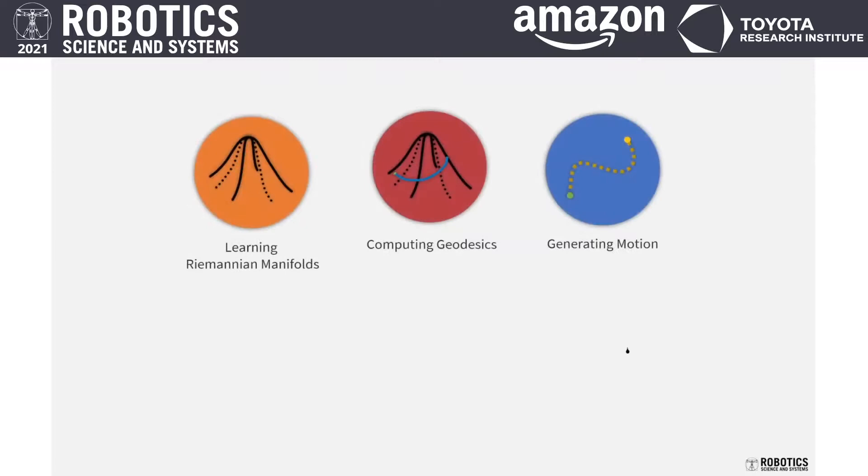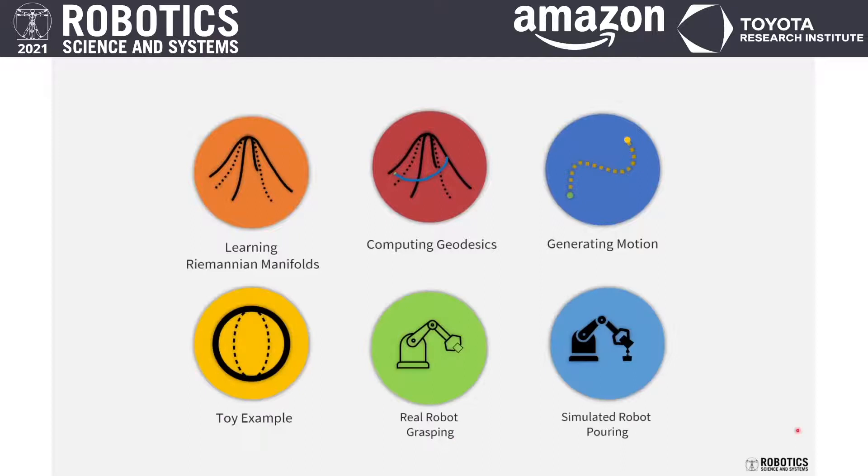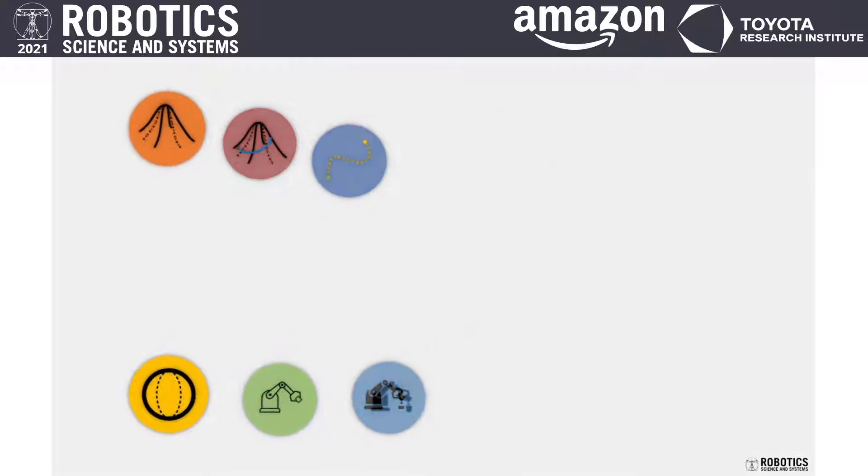We explain the method in three different steps: learning Riemannian manifold, computing geodesics, and generating motion, each in three different experiments: a toy example, a real robot grasping scenario, and simulated robot pouring scenario.